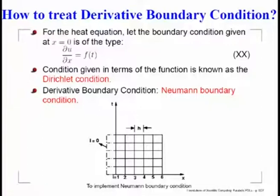For example, on the left boundary of the heat equation, suppose we put ∂u/∂x = f(t). Then how do we solve the problem? The difficulty is how to apply the difference equation when the solution value at the boundary is not known — only the derivative is prescribed.